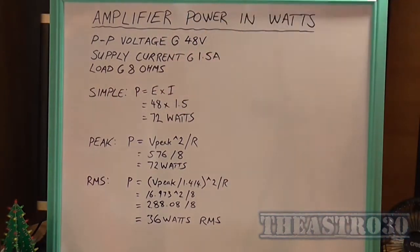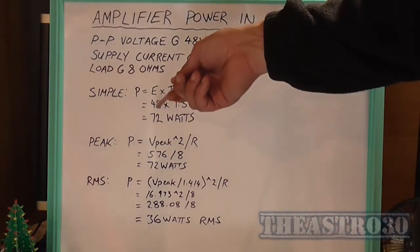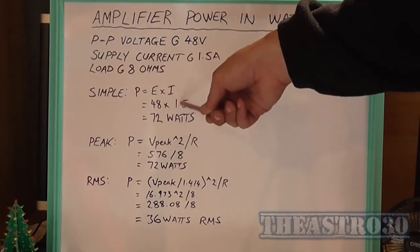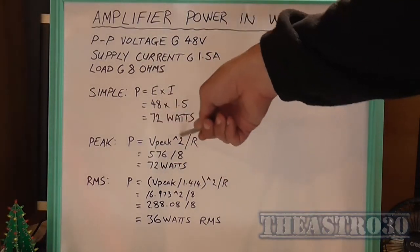So that's your voltage, peak to peak, times the current draw. In this instance I have chosen 48 volts peak to peak and 1.5 ampere current draw. That equals 72 watts.